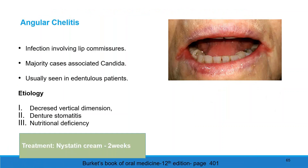Angular cheilitis involves infection of the lip commissures. The majority of cases are associated with Candida, usually seen in edentulous patients. Etiology includes decreased vertical dimension, denture stomatitis, or nutritional deficiency. Treatment involves nystatin cream for two weeks.